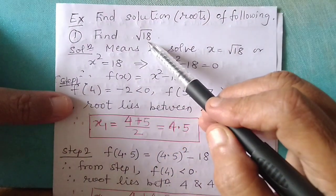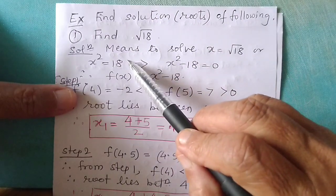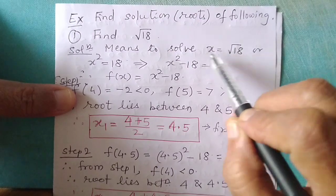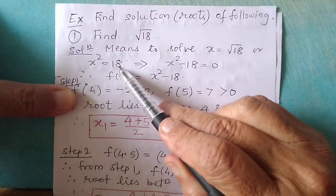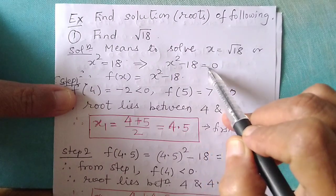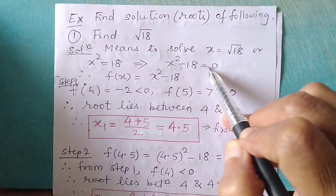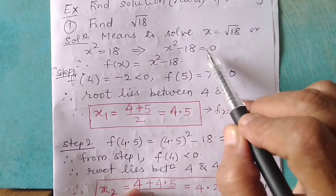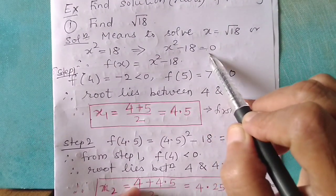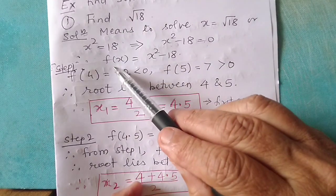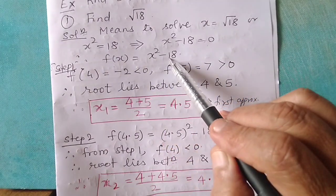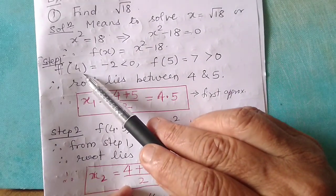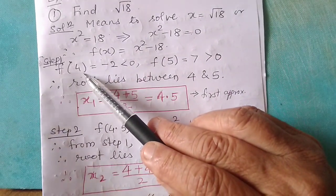Find root 18. To create the equation f of x, let x equal square root of 18. Squaring both sides, x square equals 18, or x square minus 18 equals 0. So finding root 18 is the same as finding the solution to x square minus 18 equals 0. Let f of x equal x square minus 18.